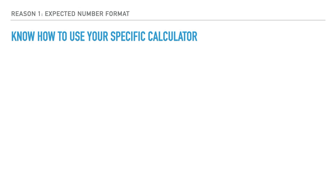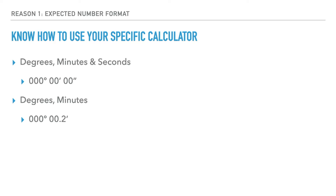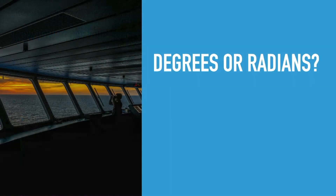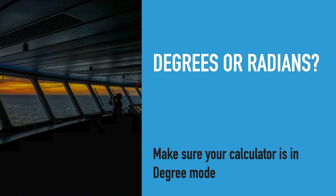Reason number one is the simplest — it's down to not understanding the format that their particular calculator requires the figures to be entered. Each calculator is different in the format that it handles degrees, minutes and seconds. For instance, the calculator I have used since high school requires degrees, minutes and seconds to be entered as whole numbers. Most other calculators expect degrees and minutes as whole numbers with seconds entered as a decimal of the minutes. So a position like 10 degrees 10.5 minutes would be entered as 10 degrees 10 minutes 30 seconds on those calculators. It's important to understand how to enter figures correctly or you'll get vastly different answers. It's also important to ensure that your calculator is working in degree mode, not radians.